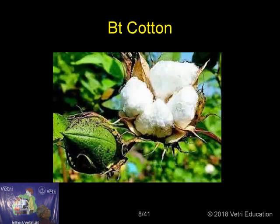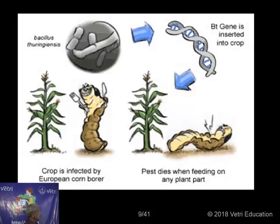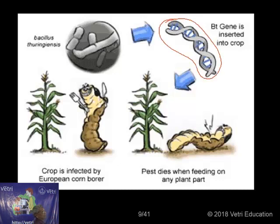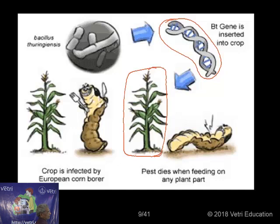Bacillus thuringiensis is a bacterium. Its Bt gene, when introduced into a crop plant, kills worms feeding on the crop. The crop is infected by the European corn borer, which normally bores into and kills the corn plant. The pest dies when feeding on the Bt-modified plant. That is how the Bacillus thuringiensis gene saves the plant from corn borers. The help comes from a bacterium — a bacterium is now saving the crop.